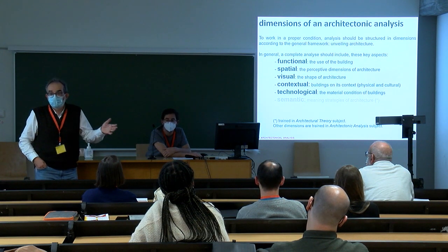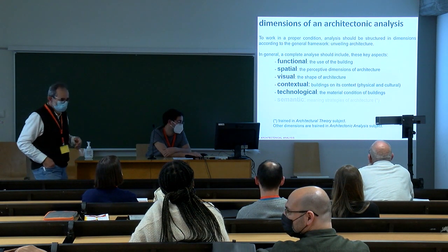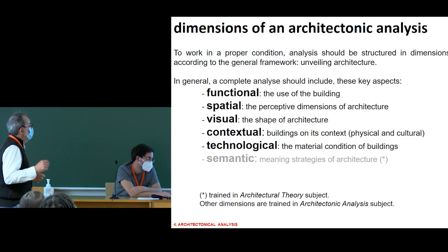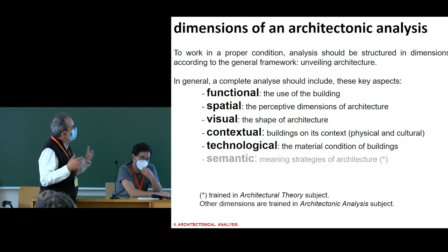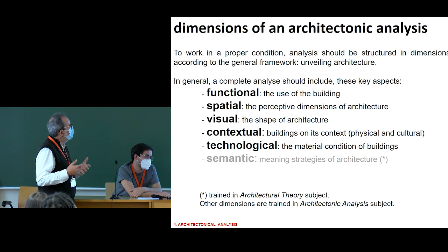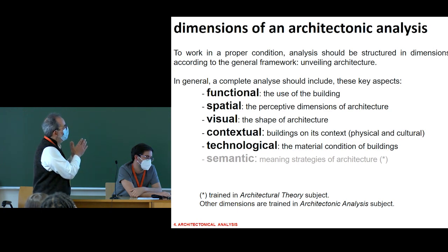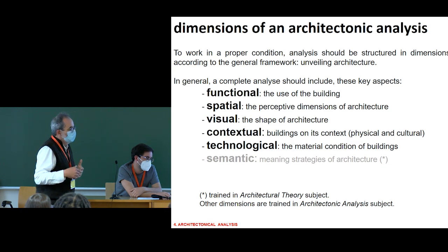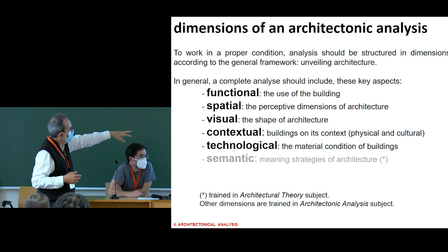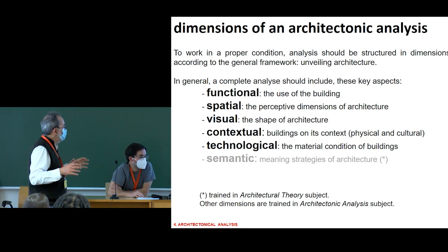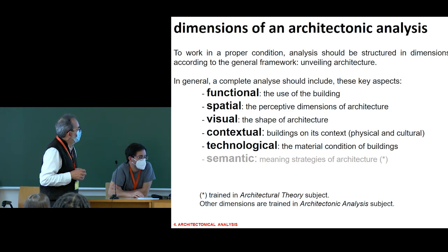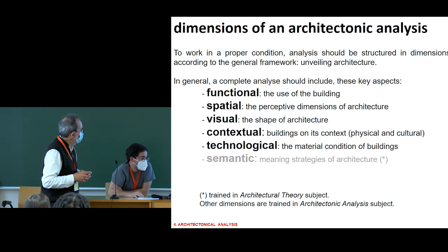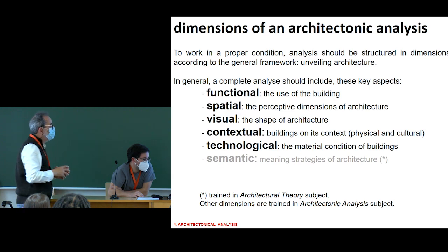To work in a proper condition, analysis should be structured in dimensions according to the general framework of unveiling architecture. A complete analysis should include dimensions like functional, spatial, visual, contextual, technological, and also semantic. I have to say that the semantic dimension is not under our umbrella — it is taught in the architectural theory subject. The first five dimensions are enough for us. We belong to the graphic area of the architectural school.